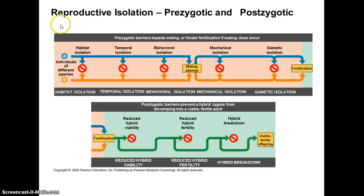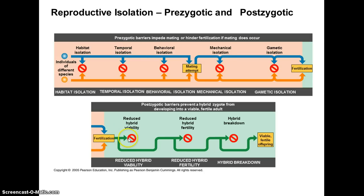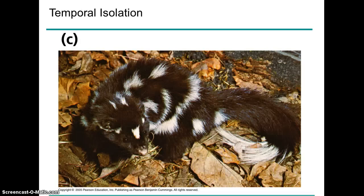What's going to keep two species from reproducing with each other? We refer to these as isolating mechanisms, and they come in two forms: prezygotic and postzygotic. In prezygotic isolation, a viable zygote and embryo never forms. In postzygotic isolation, you can get the formation of an embryo, but that embryo often is of reduced vigor.